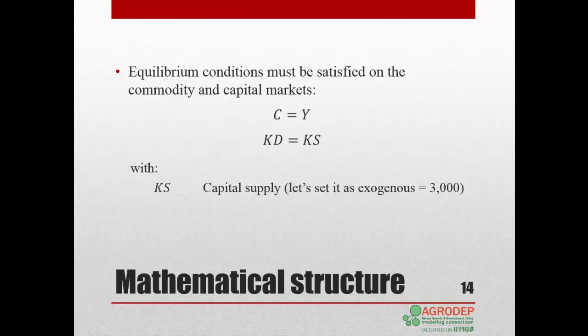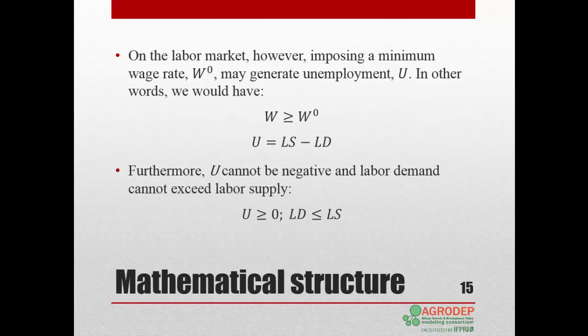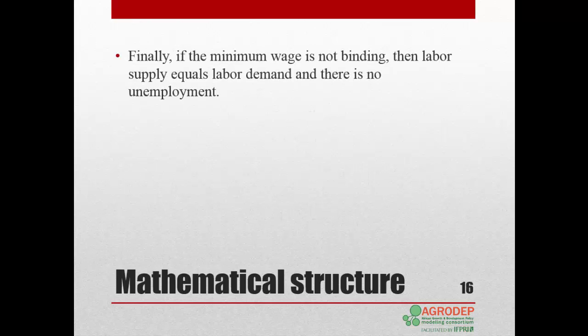Similarly to the model in Lesson 8, equilibrium conditions must be satisfied on the commodity and capital markets, where capital supply Ks is exogenous and equal to 3000 units. On the labor market, imposing a minimum wage rate W0 may generate unemployment U. We express the new condition as: the wage rate must be greater than or equal to the minimum wage, and unemployment is the difference between labor supply and labor demand. Furthermore, U cannot be negative, so labor demand cannot exceed labor supply. If the minimum wage is not binding, labor supply equals labor demand and unemployment is zero.